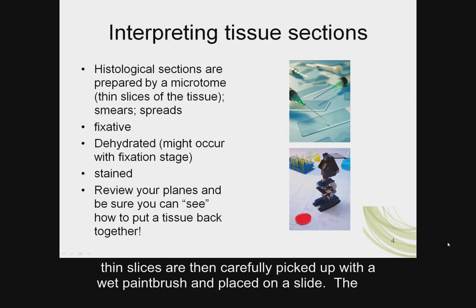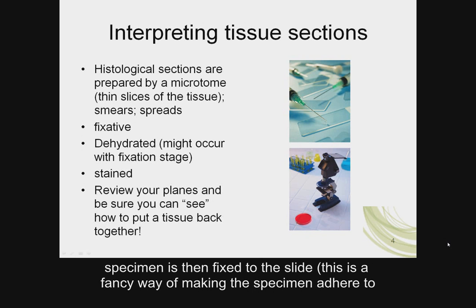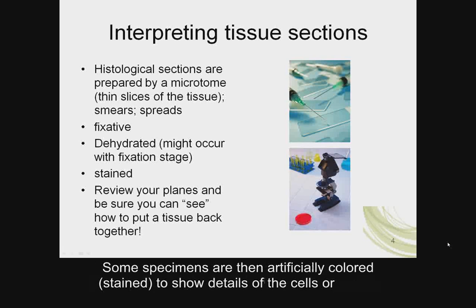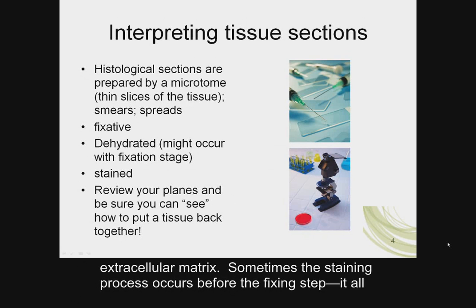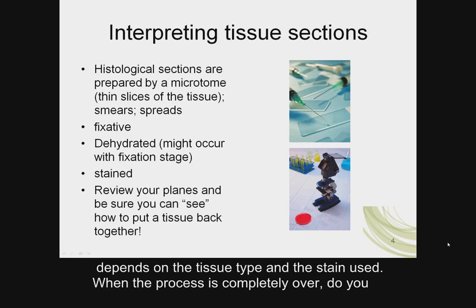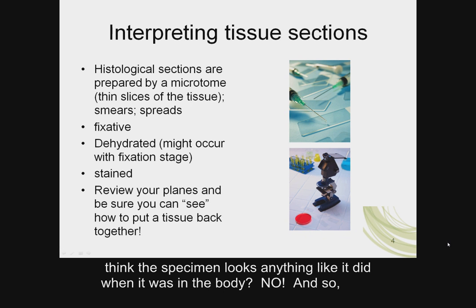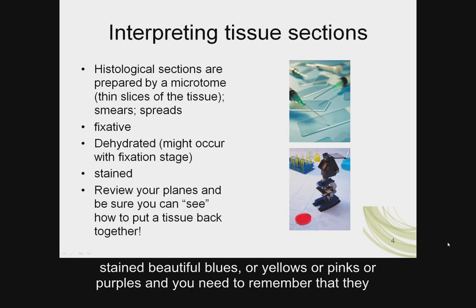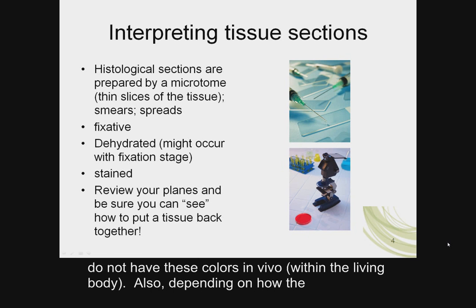These thin slices are carefully picked up with a wet paintbrush and placed on a slide. The specimen is then fixed to the slide — a process that makes the specimen adhere permanently. The specimen is usually dehydrated during fixation. Some specimens are then artificially colored or stained to show details of the cells or extracellular matrix. When the process is over, the specimen does not look anything like it did in the body — it will be stained beautiful blues, yellows, pinks, or purples. You need to remember that these colors do not exist in vivo, meaning within the living body.